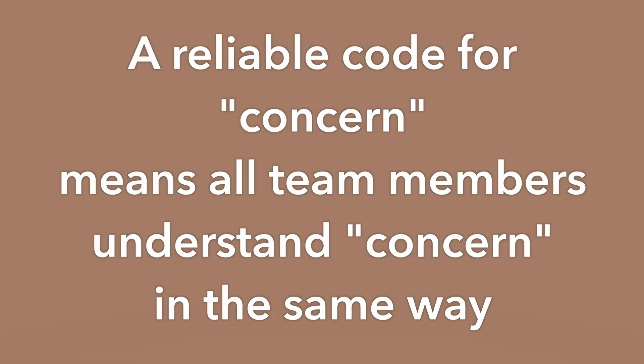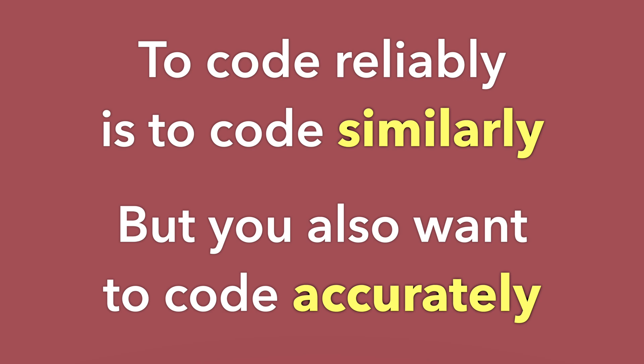Going back to the concern example — if something is reliable, you are all understanding 'concern' the same way. Whether that definition of concern is valid — in other words, truly reflects what concern is — is a separate issue. To code reliably means everybody codes similarly, but you also want to code accurately, or in a valid way, to capture the concepts of interest.